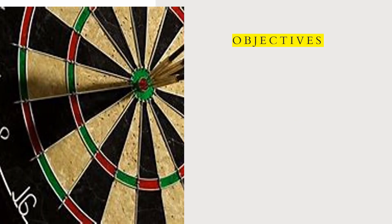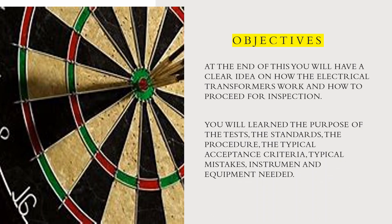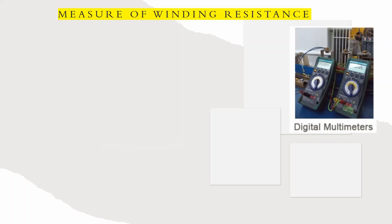The objectives are to learn the purpose of the test standards, procedures, typical acceptance criteria, typical mistakes, and instruments and equipment needed. Now we start with the measure of winding resistance.